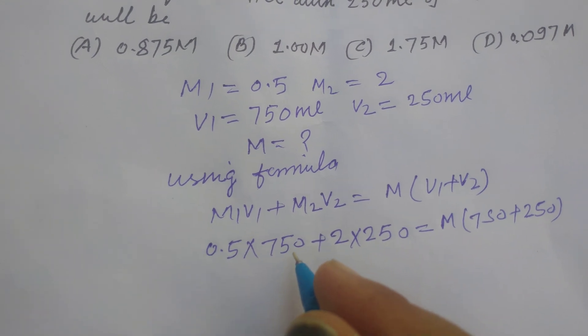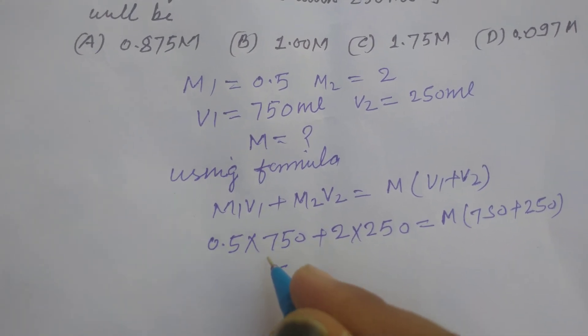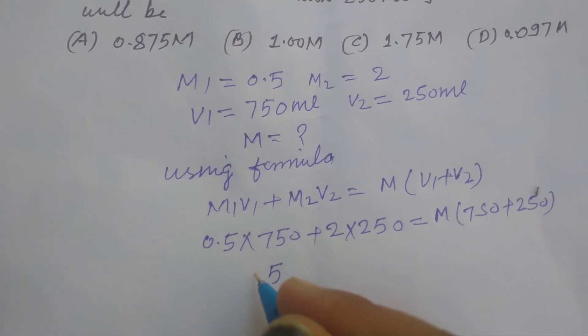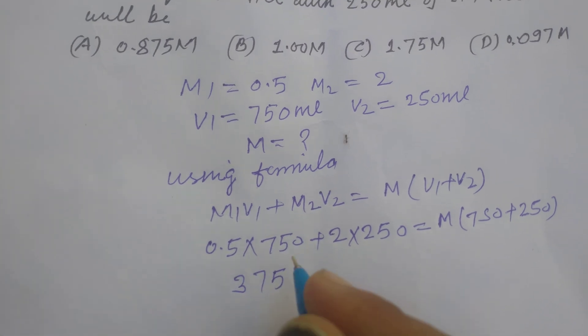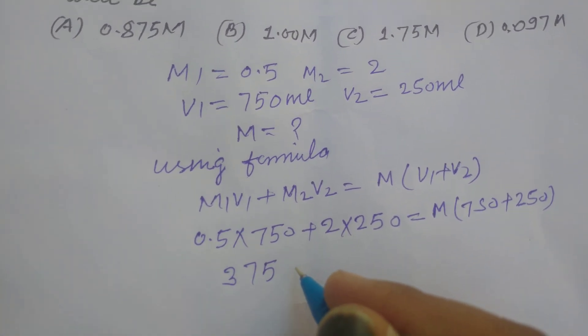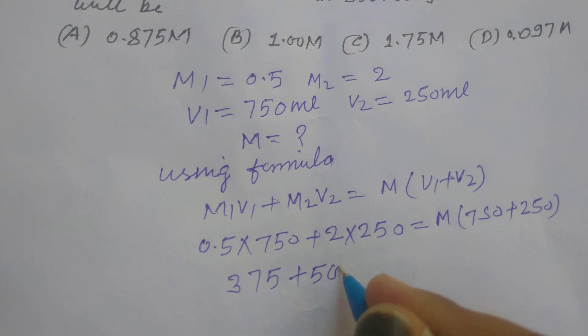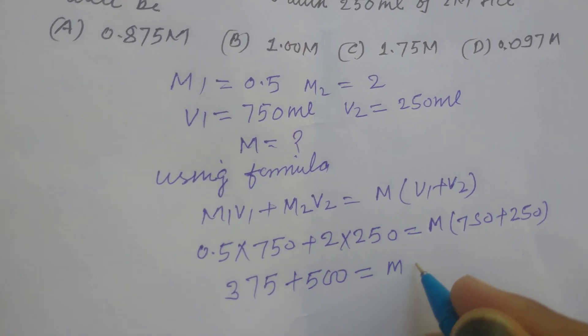So we multiply it. This is 375 plus 500 equal to M into,